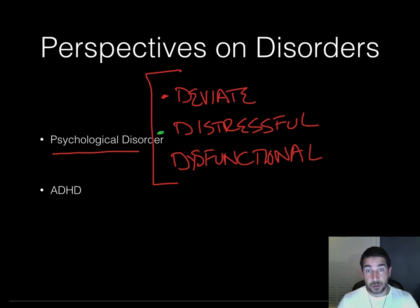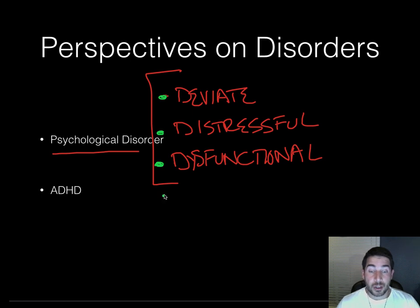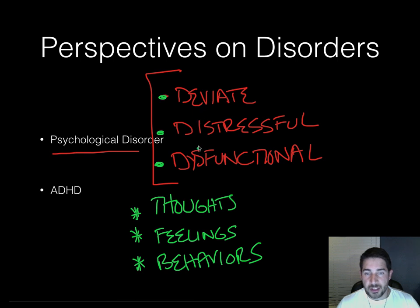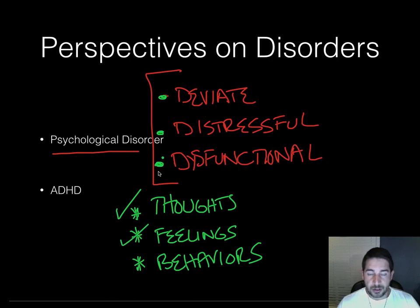So that's a key for a psychological disorder. First it has to be deviant, then it has to be distressful to you, and it has to be dysfunctional. It has to occur with either your thoughts, your feelings, or your behaviors. If your thoughts are deviant, distressful, and dysfunctional — that's a psychological disorder. Same with feelings or behaviors.